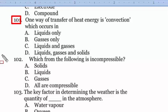Question number 101: One way of transfer of heat energy is convection, which occurs in liquids and gases. Heat can be transferred from one place to another by three methods: conduction, convection, and radiation. Conduction takes place in solids, convection in liquids and gases, and radiation through anything that will allow radiation to pass.